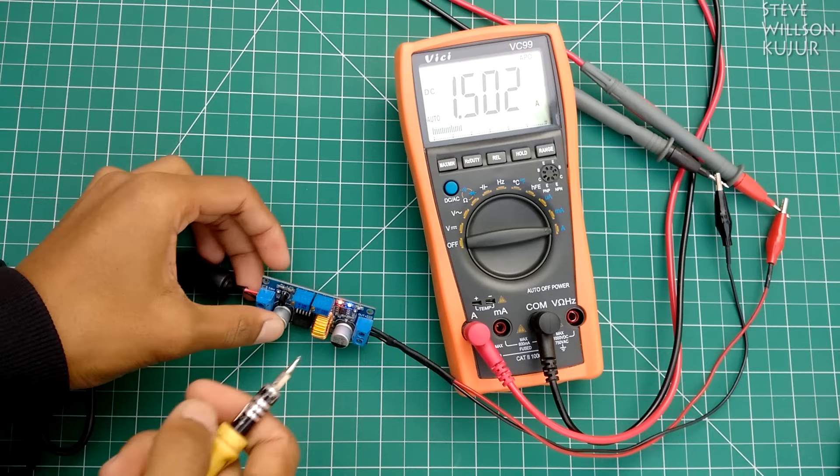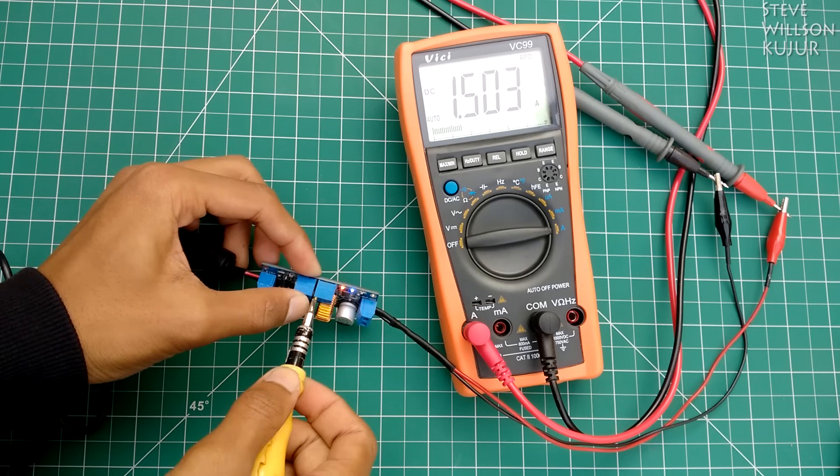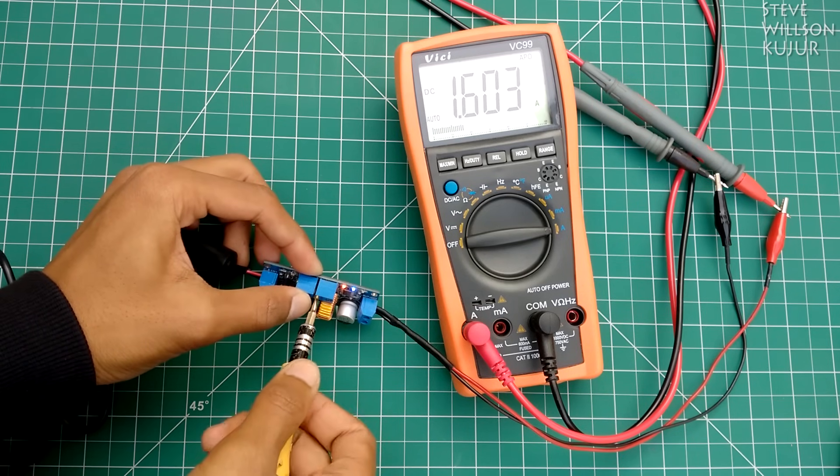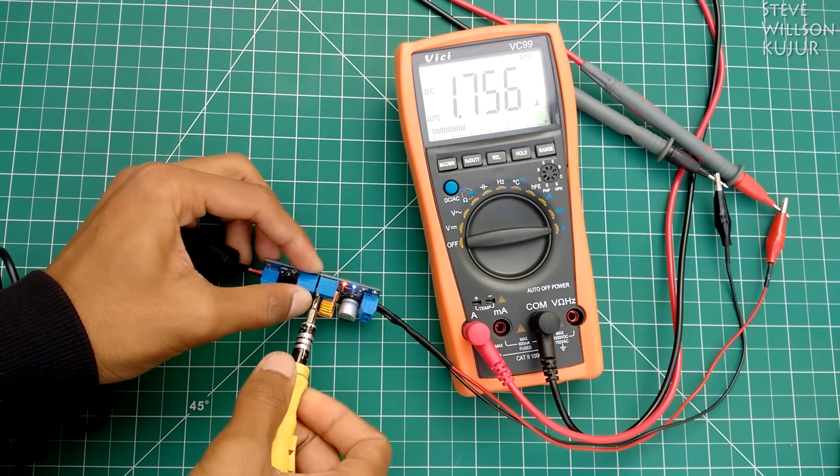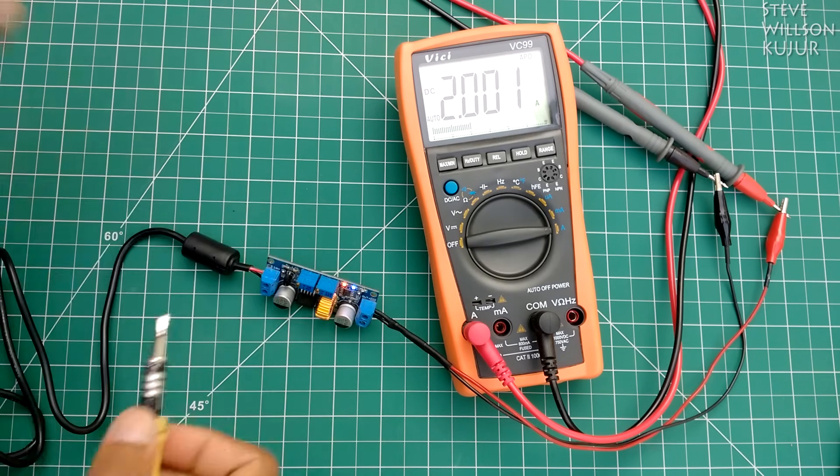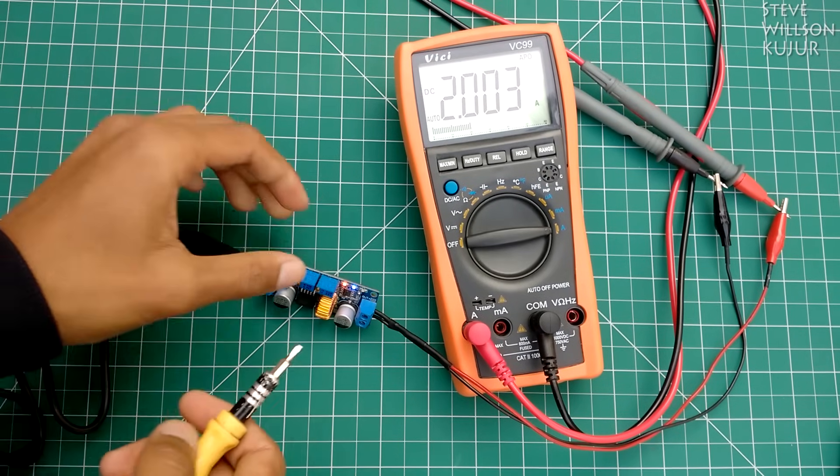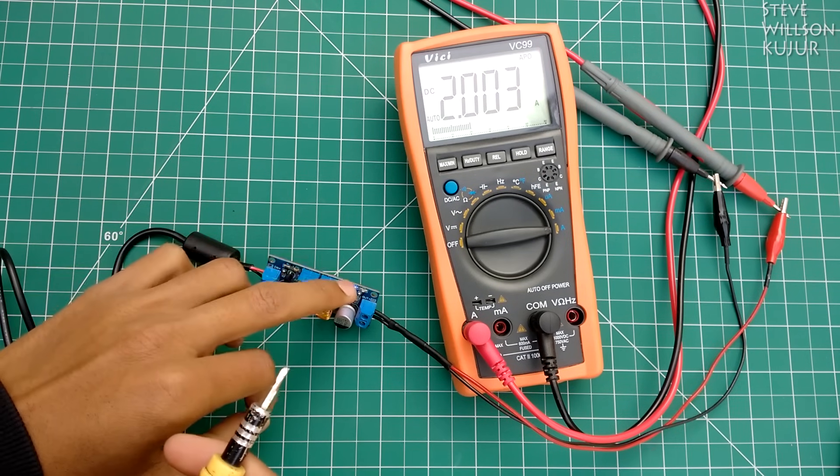Now set the current with this potentiometer. I will go for 2 amperes because my battery is small. If you use a bigger battery, then you can go up to 5 amperes with this module.